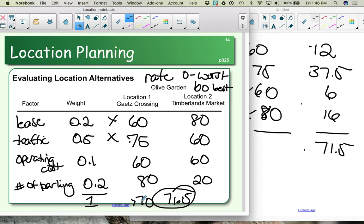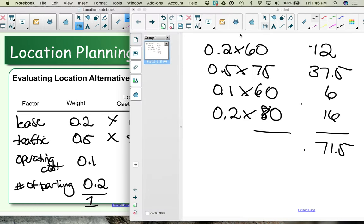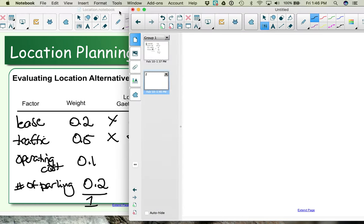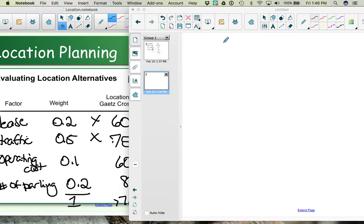This is above the threshold, so already Gates Crossing looks like a candidate. We need to compare this though to the number for Timberlands market to figure out which one is better. A higher number for your factor rating analysis is the better location. So let's do those calculations here for Timberlands market.